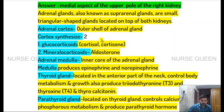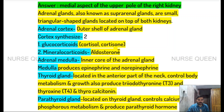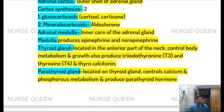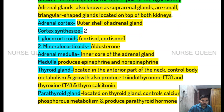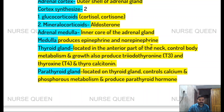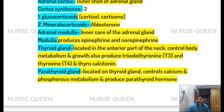In the outer shell, the adrenal cortex produces two hormones: glucocorticoids and mineralocorticoids, including aldosterone. The adrenal medulla is the inner core, and the adrenal cortex is the outer shell. The medulla produces epinephrine and norepinephrine — the fight-or-flight hormones of the sympathetic nervous system.